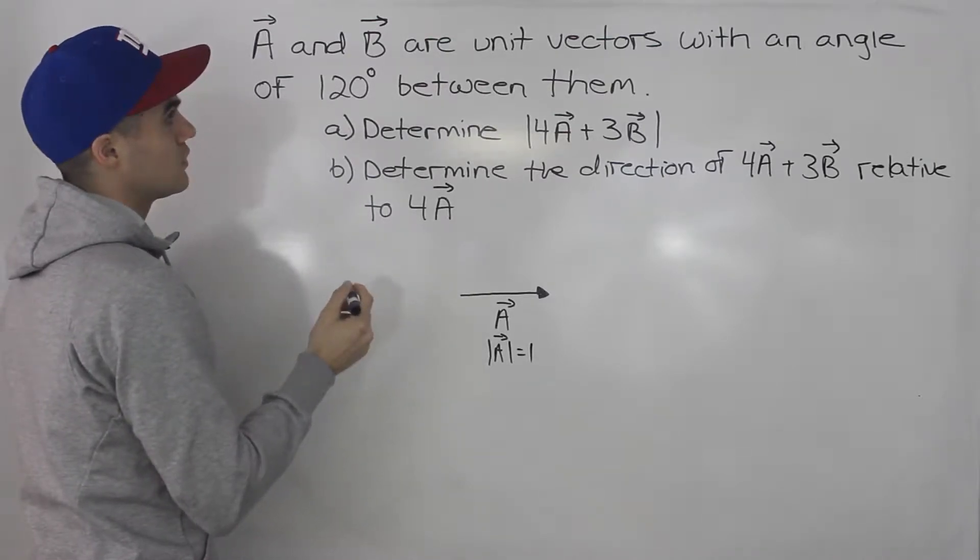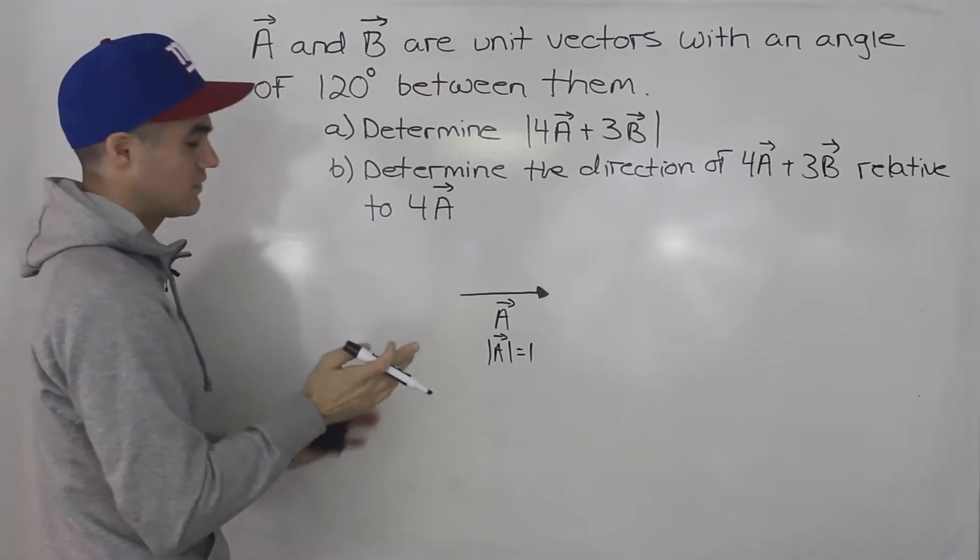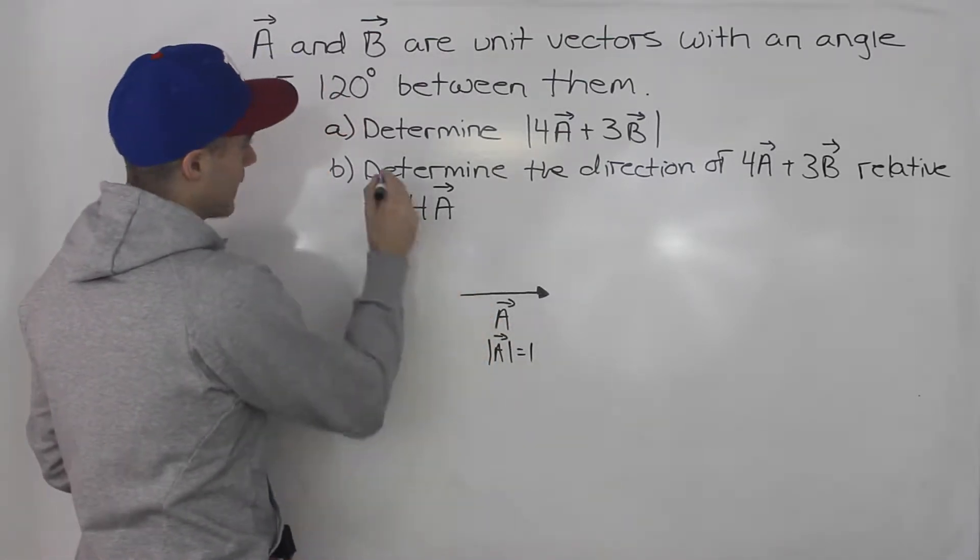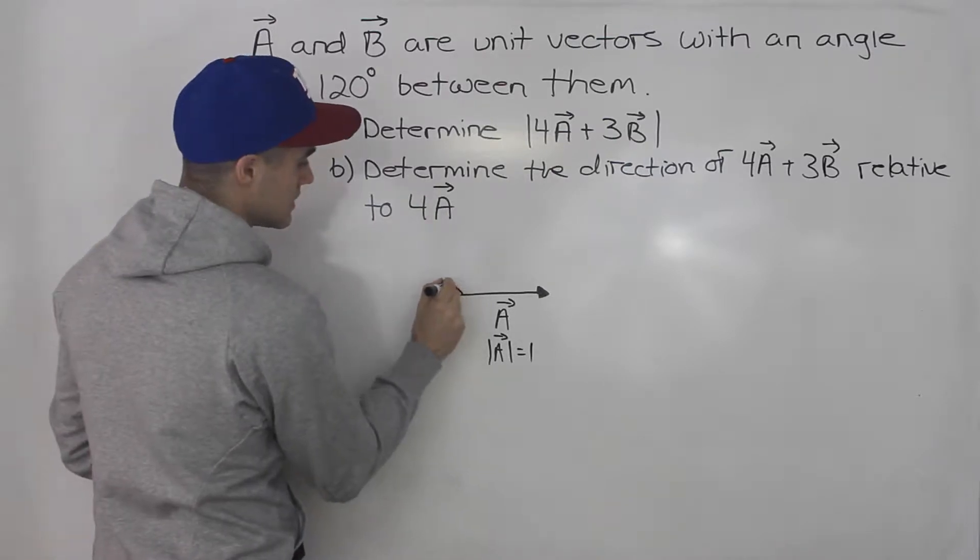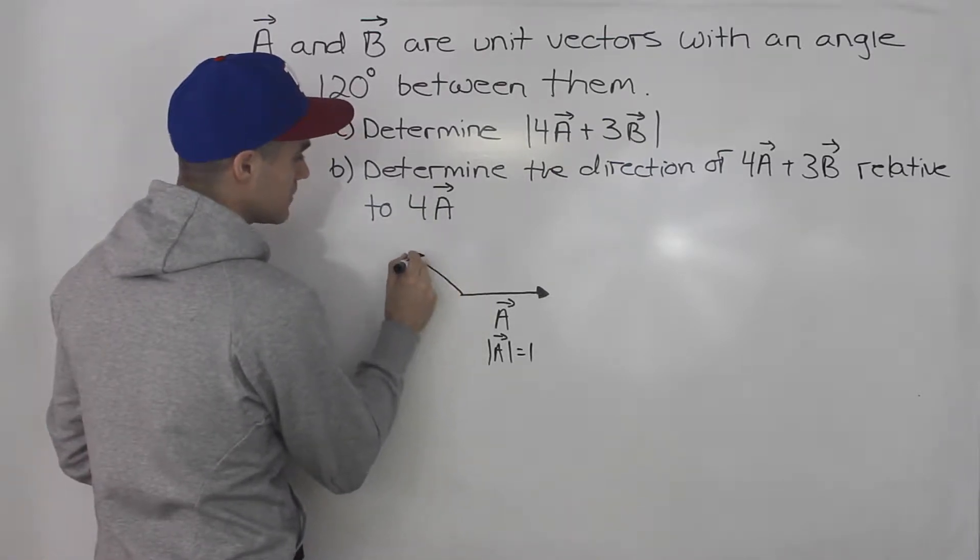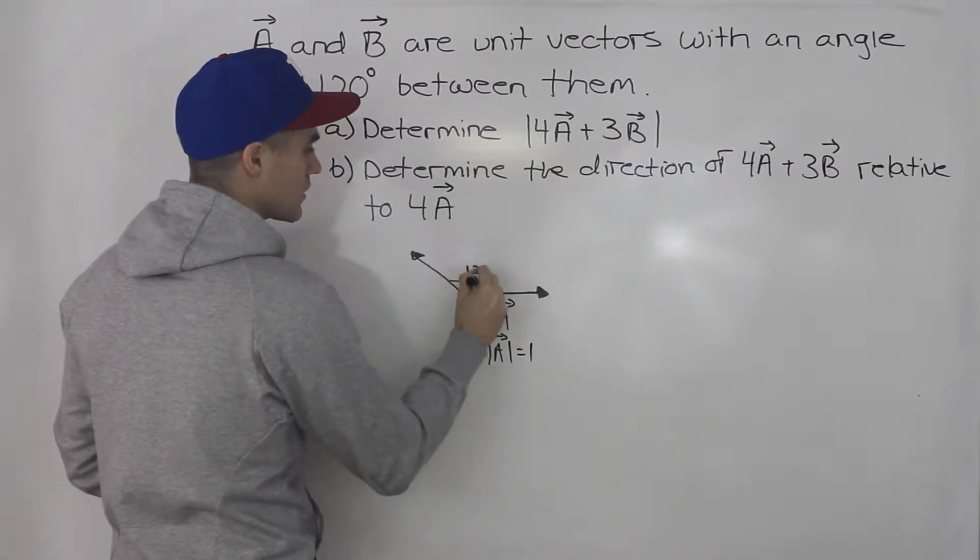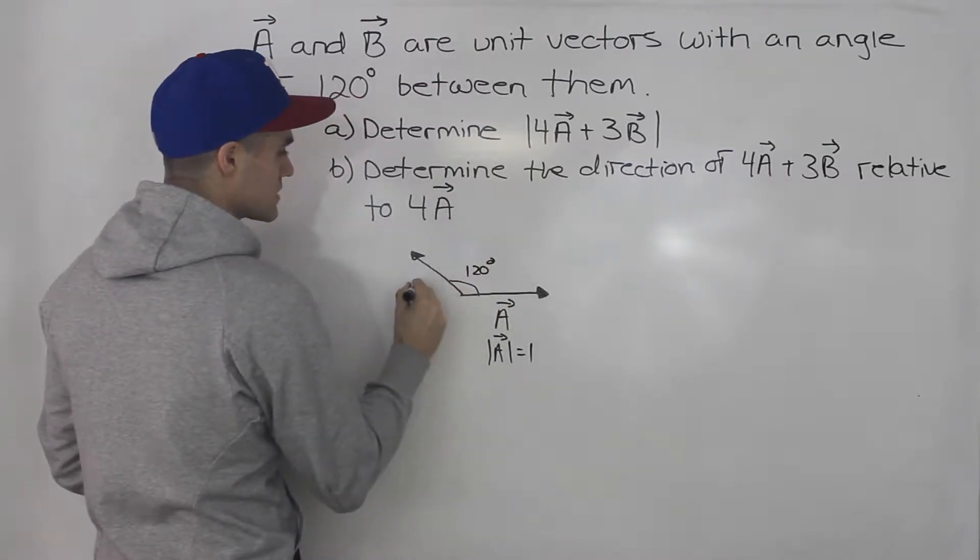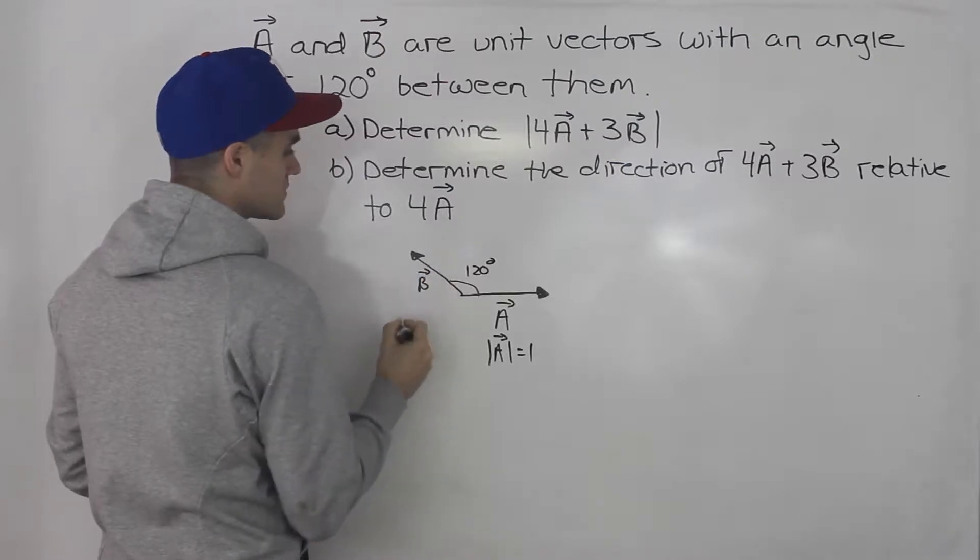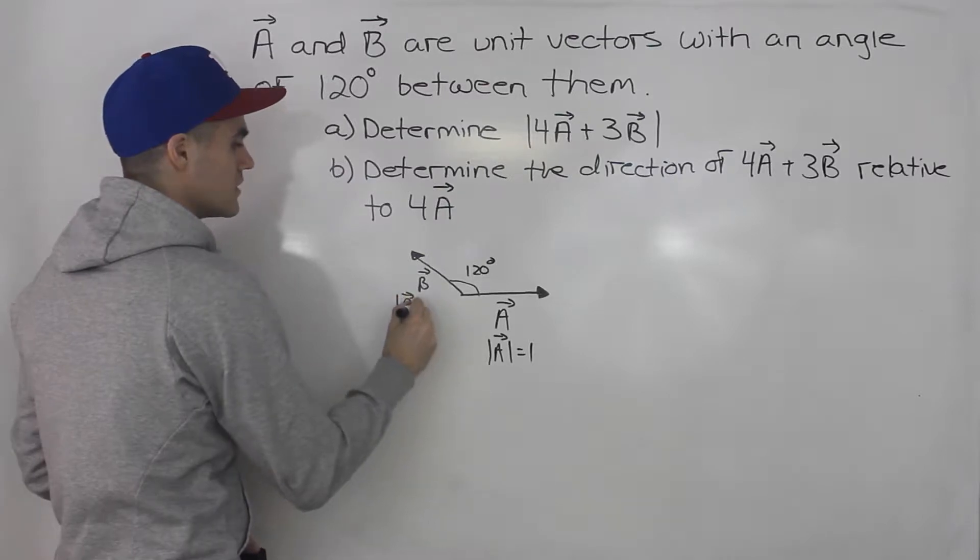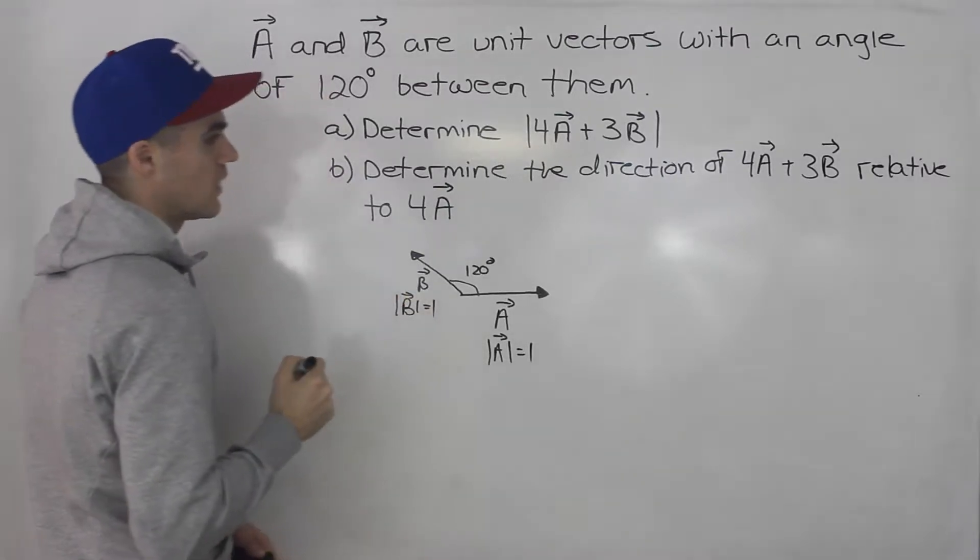And whenever you're given an angle between two vectors, it's when the vectors are attached tail to tail. So an angle of 120 degrees, that means that b would be pointing this way. This is 120 degrees over here. So this is vector b and it's a unit vector, so the magnitude of b is equal to one as well.